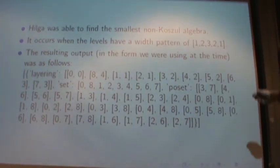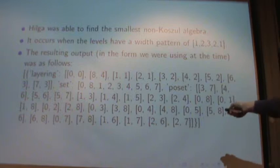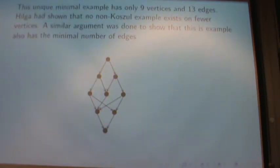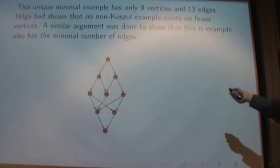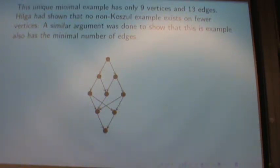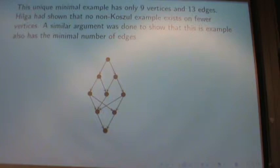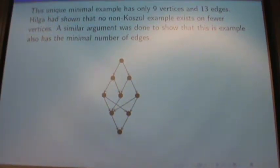So Hilga was able to find the smallest non-causal algebra. It occurred when the widths were 1, 2, 3, 2, 1. That was the way the output looked at the time. It looks different nowadays. And that's the picture. So there it is. There's the result. So this is the unique minimal example. It has only 9 vertices. It has 13 edges. And Hilga showed that no non-causal example exists on fewer vertices. Then Hilga ran through the whole thing again with an edge proof to show that no example exists with fewer edges as well. So this is it. And this is a neat little layered graph. I'm going to call it H after Hilga. So the Hilga graph or the Hilga poset.